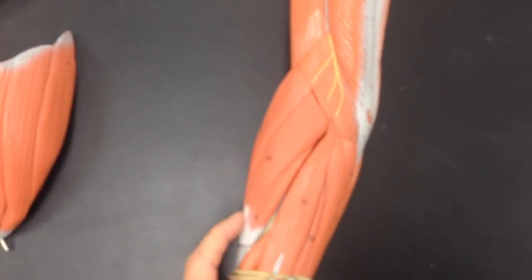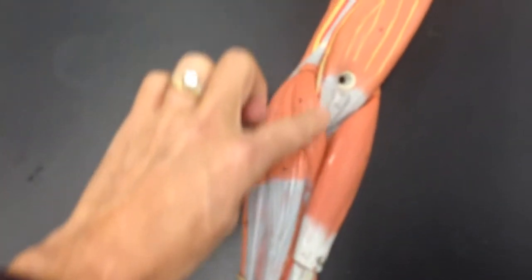Brachioradialis, once again, starts here and comes down onto the radial side. This muscle right here, that goes across, is the pronator teres.